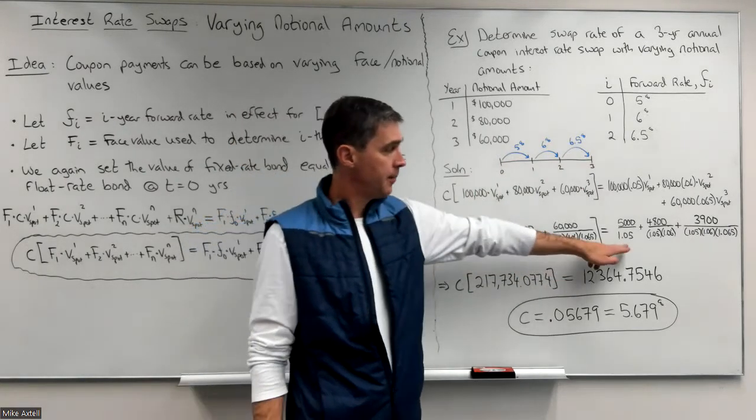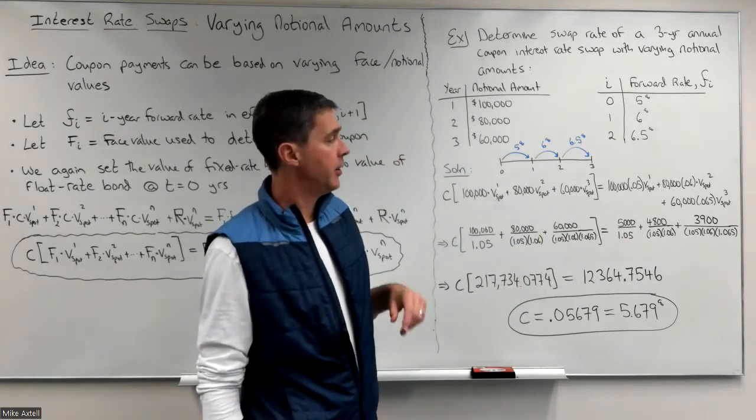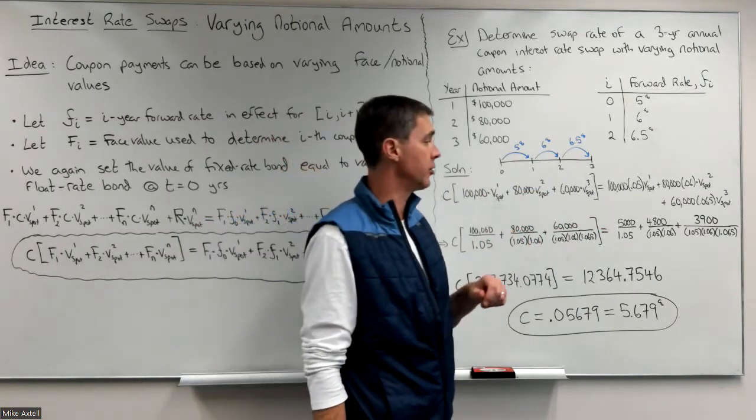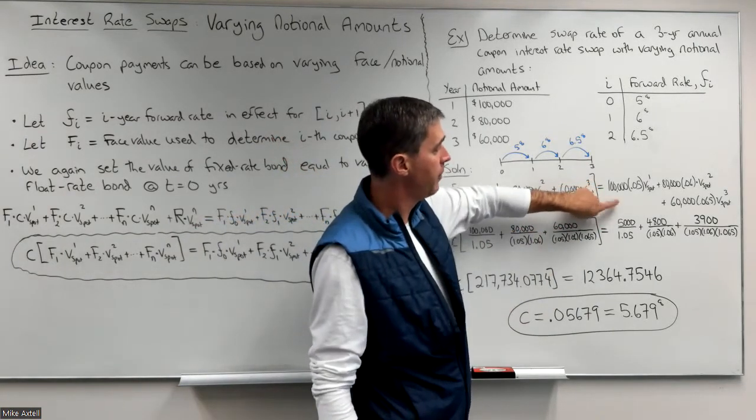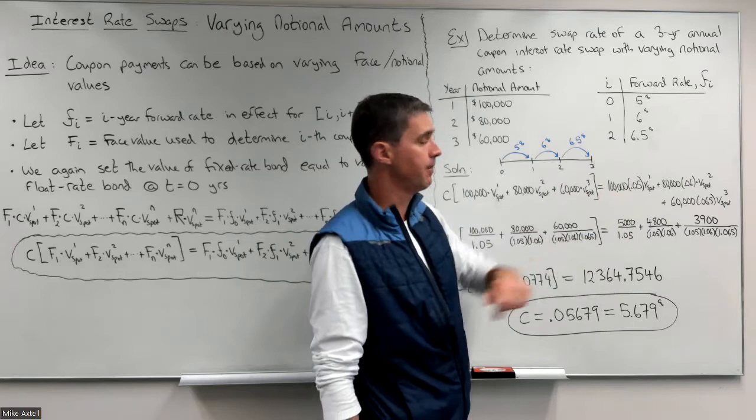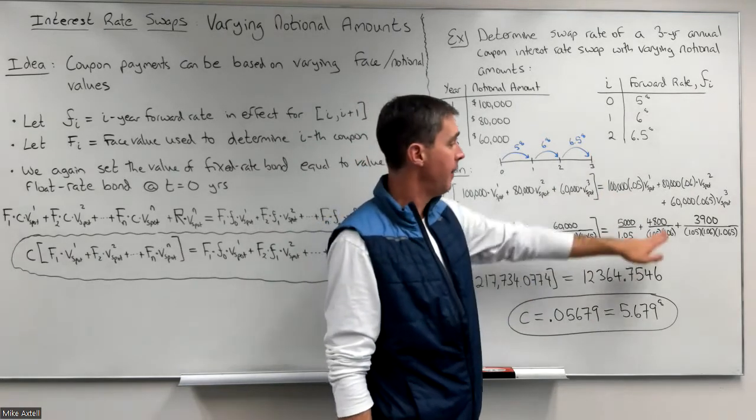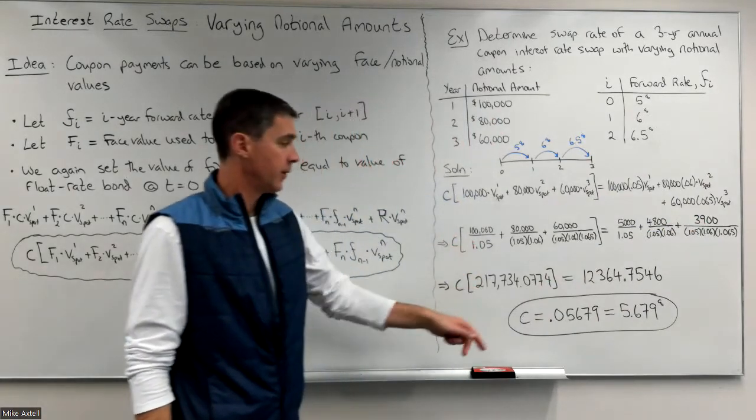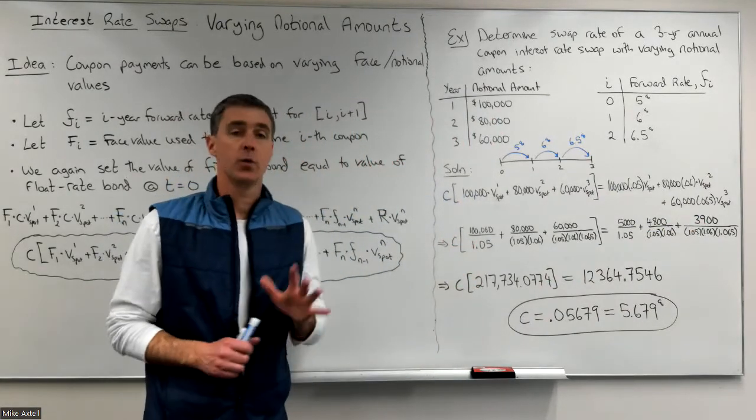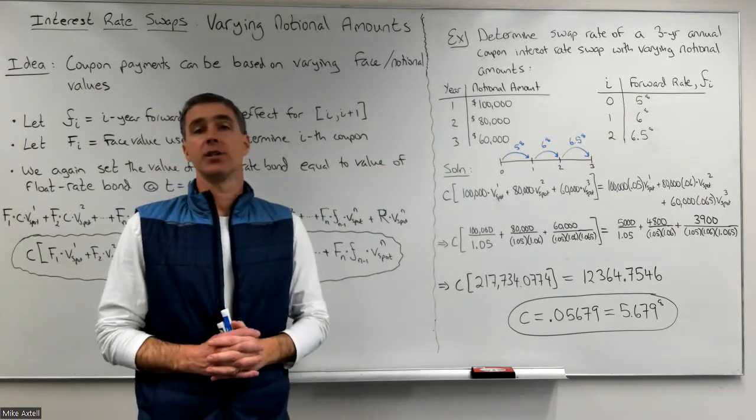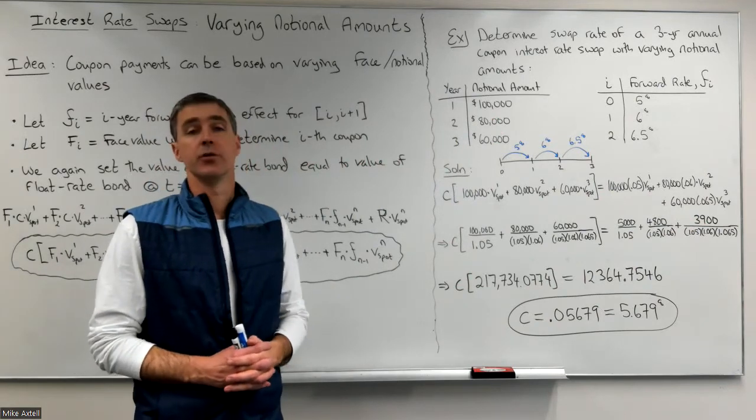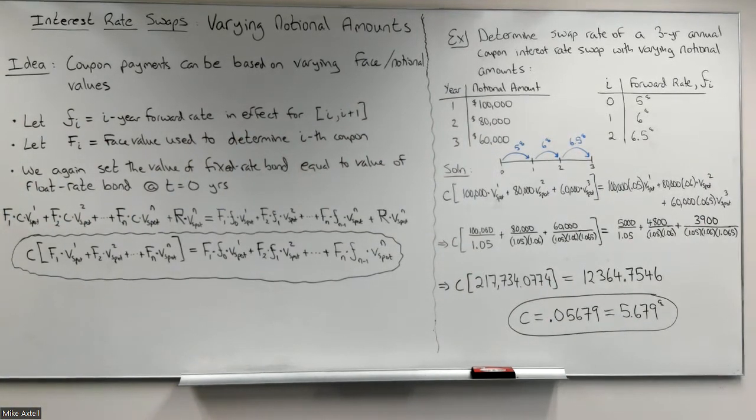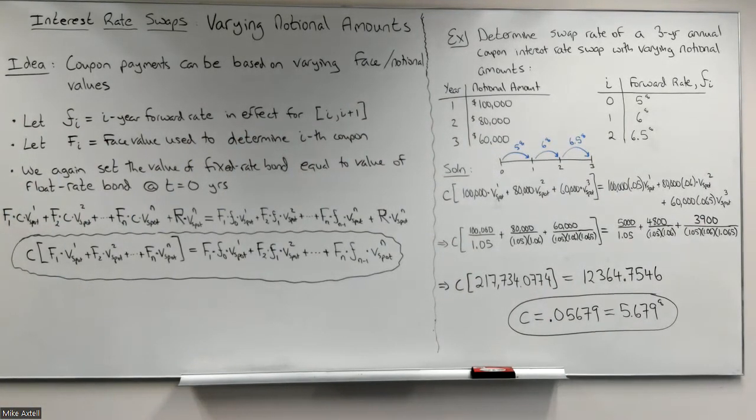These same denominators appear on the right-hand side. All I've done on the right is explicitly make clear the coupon size, the dollar value of the coupons. First one, 100,000 times 5%, $5,000, then a $4,800 coupon, then a $3,900 coupon. Solving for C yields a swap rate of 5.679 percent for this interest rate swap. Thank you.